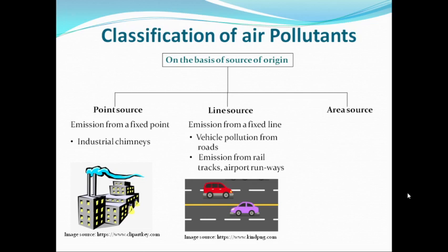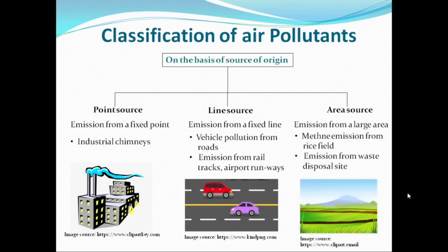Another example under this category could be emissions from rail tracks as well as emissions from airport runways. The third category is area source pollutants. When pollutants are released into the atmosphere from a large area where we cannot identify a particular point or a particular line or pathway through which the pollutants are coming, and when these pollutants are released from a very large area, all such air pollutants are known as area source pollutants. The example could be methane emission from rice fields as well as emission from waste disposal sites.